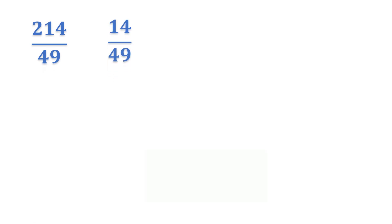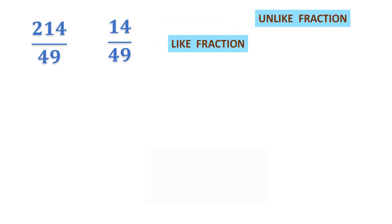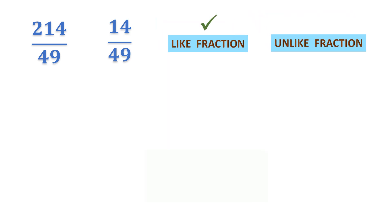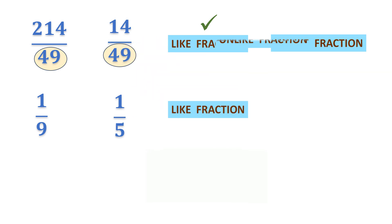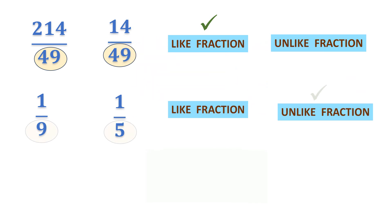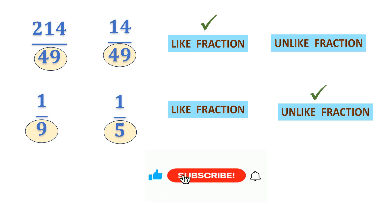Let us take some more. 214 over 49 and 14 over 49 — are they like fractions or unlike fractions? They are like fractions because 49 and 49 are the same denominators. What about 1 over 9 and 1 over 5? Look at the denominators — 9 and 5 are different, so we say this is an unlike fraction.